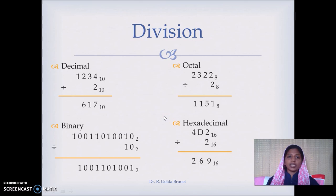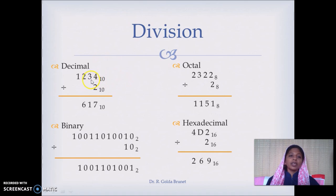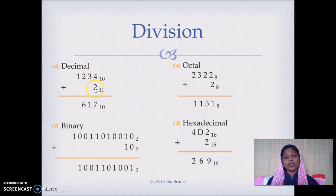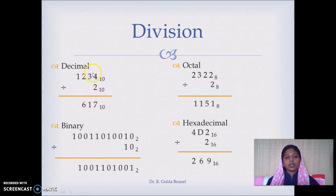For division, we divide by 2. Unlike other operations which go right to left, division goes left to right. In decimal: 1 cannot be divided by 2, so we take 12 together. 12 divided by 2 is 6. Then 3 divided by 2 is 1 with remainder 1, which is passed to the next digit giving 14. 14 divided by 2 is 7.